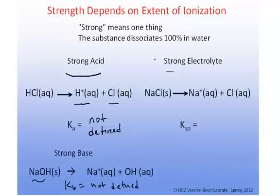This behavior is not unlike a soluble salt, which we would consider a strong electrolyte. For example, sodium chloride. When you place sodium chloride in water, it dissociates 100% to give the sodium ion and the chloride ion. Because again, we're talking about relatively dilute solutions, there is no Ksp defined for the soluble salts either.